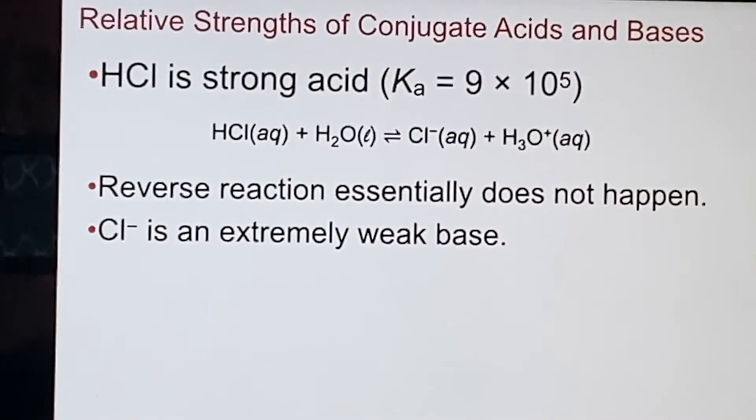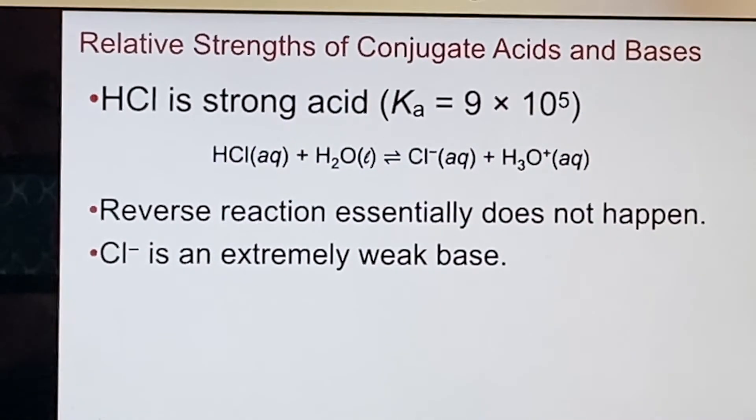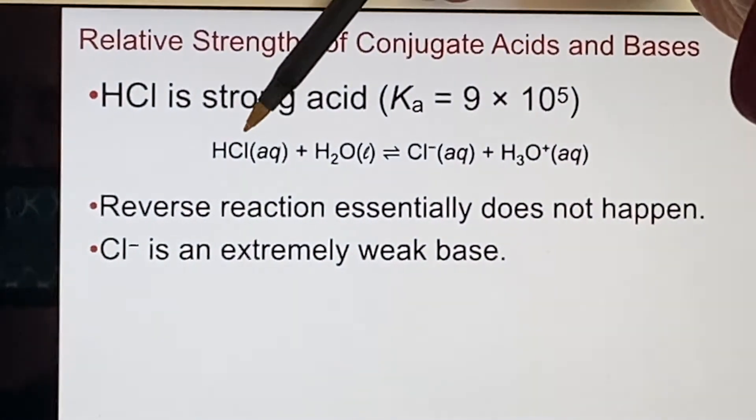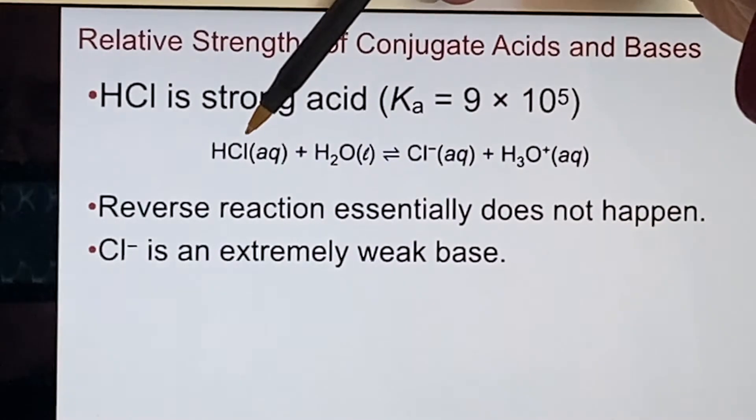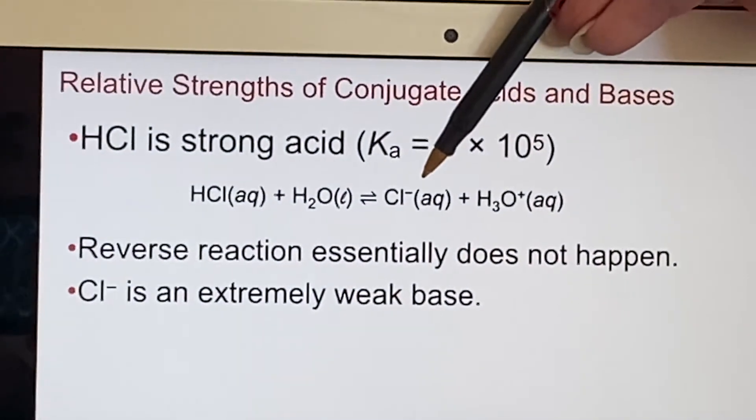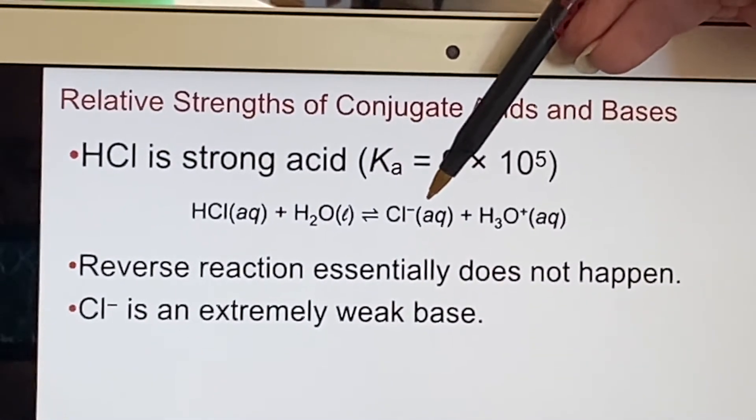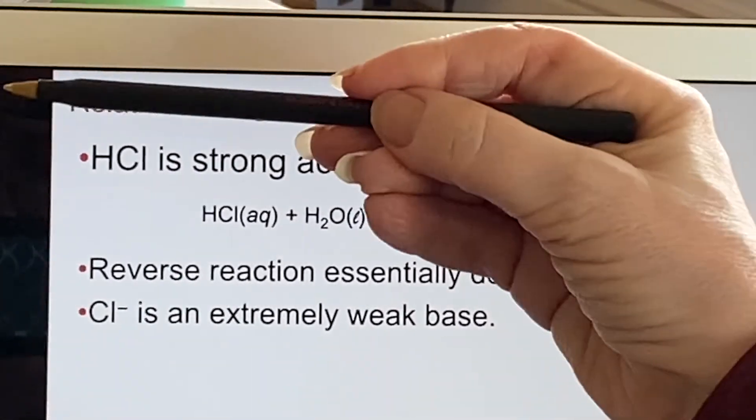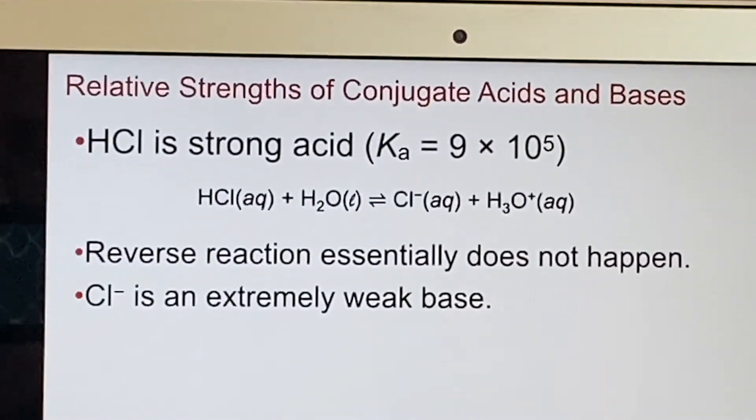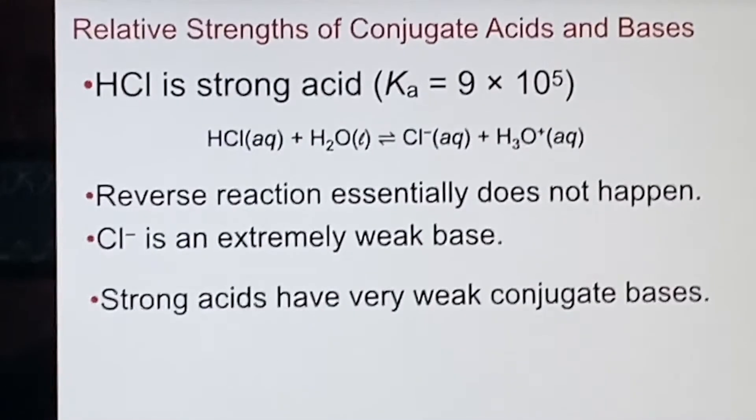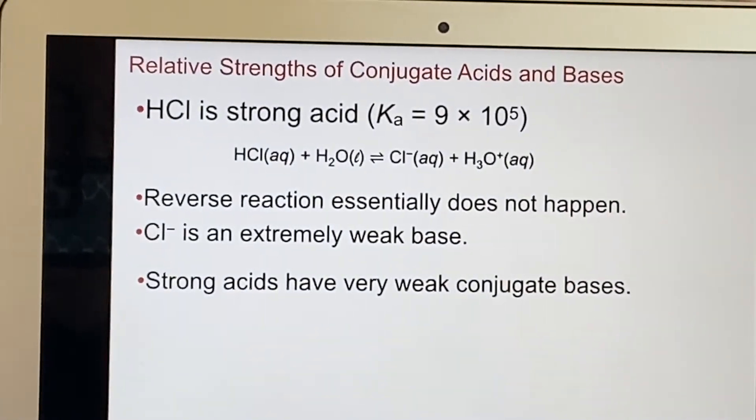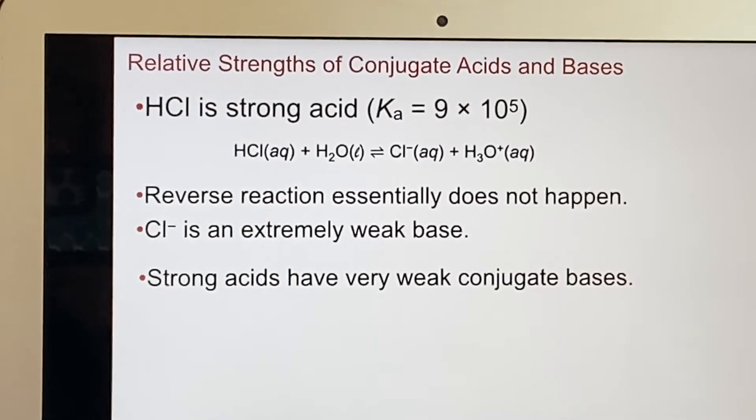But now we're talking about acids and bases and conjugates, right? So we have to stop and think about this. If this is such a strong acid, and I'm identifying this as the conjugate base, it must be extremely weak because it's not going that direction hardly at all. I'll let that sink in for a minute. The bottom line is strong acids have very weak conjugate bases.